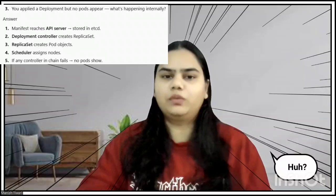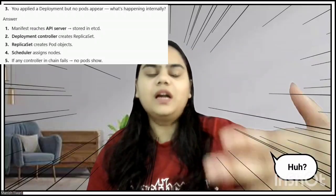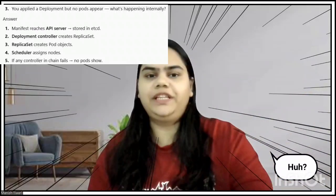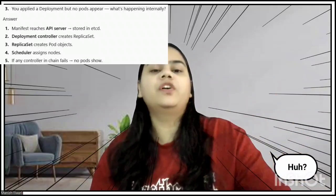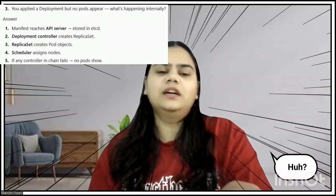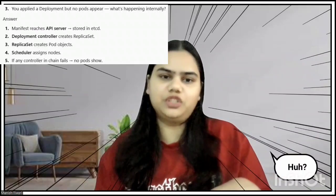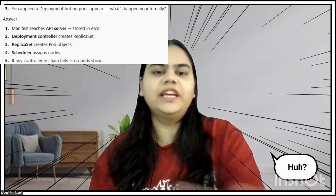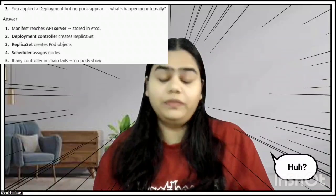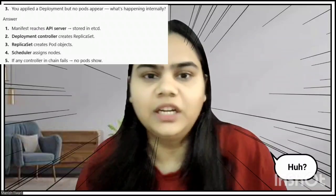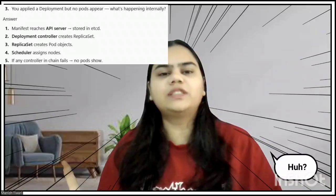When you apply a deployment file, the API server validates it and makes an entry in etcd. The Deployment controller creates a ReplicaSet entry in etcd. The ReplicaSet controller gets notified and creates pod entries in etcd. The scheduler then gets notified, chooses a node, and patches the pod entries with the node name. The corresponding kubelet then creates the actual container.